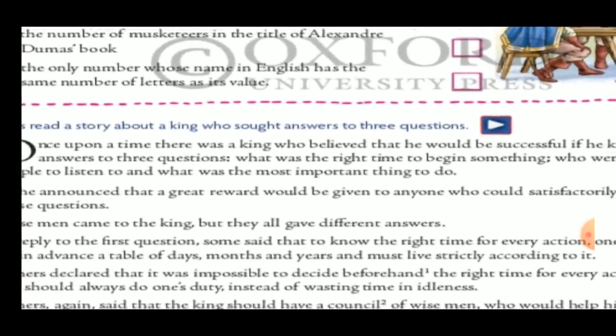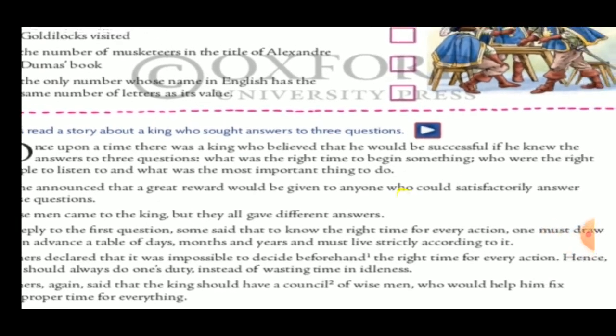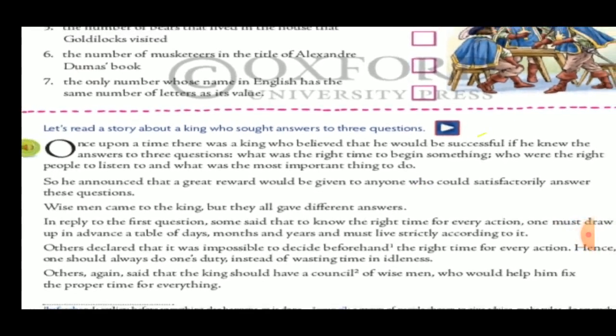Once upon a time there was a king who believed he would be successful if he knew the answers to three questions: What was the right time to begin something? Who were the right people to listen to? And what was the most important thing to do? The king believed he would be successful if he knew these three answers.